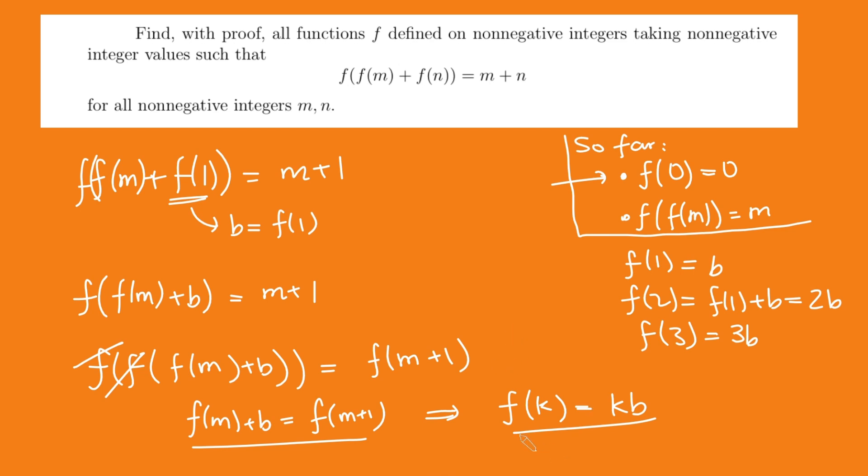Now what we're going to do is just apply, and this is true for all non-negative integers k. And so if I apply f again on both sides, I get f of f of k equals f of kb. But f of kb, because of this result here, that's just going to be k times b squared. And so we have the f of f of k is k times b squared. But from earlier, we have the f of f of k is just k. And so we have that k equals k times b squared. And so therefore, b squared must equal 1.